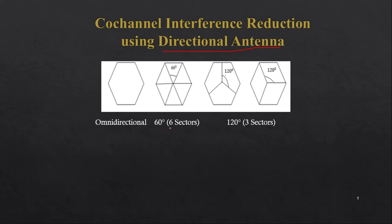We can use a six-sector concept or a three-sector concept. Six sectors means we are dividing a cell into six equal parts, so each sector will have a 60-degree angle. You can see sectors one through six — this kind of cell is divided into six sectors, and each sector will have an individual antenna.